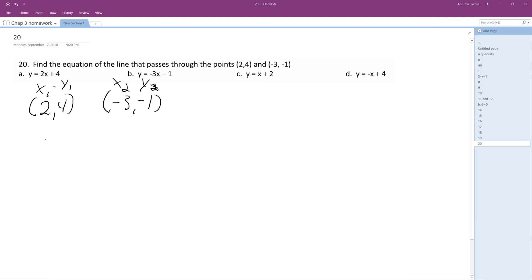Alright, so we'll do y2 minus y1 over x2 minus x1, and we'll get negative 1 minus 4 over negative 3 minus 2. So we end up with negative 5 over negative 5, which is 1.